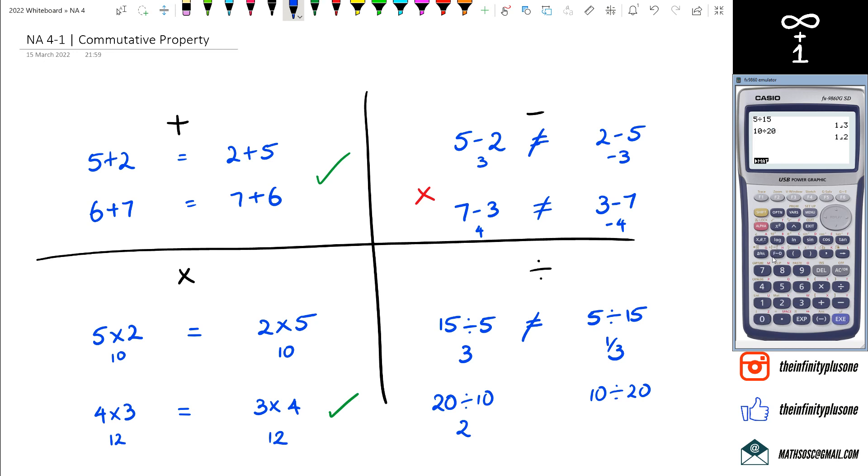So 10÷20 is 0.5 or we can say as a half. Once again, I can say that 20÷10 is not the same as 10÷20, so it doesn't actually work.